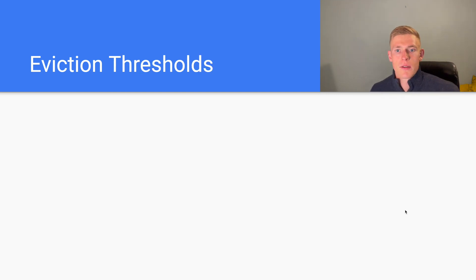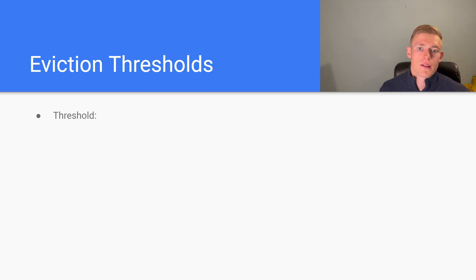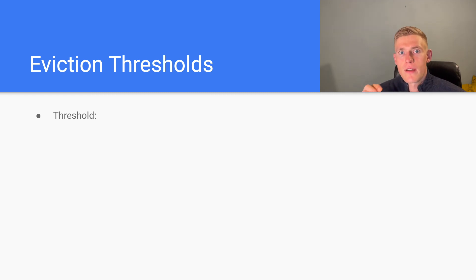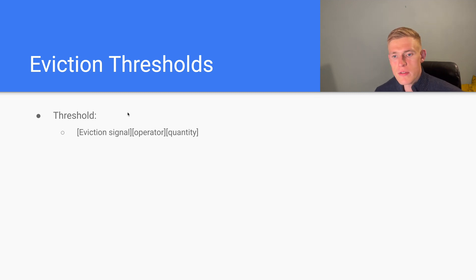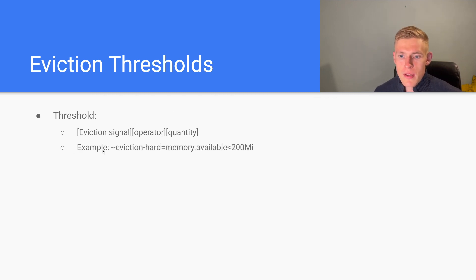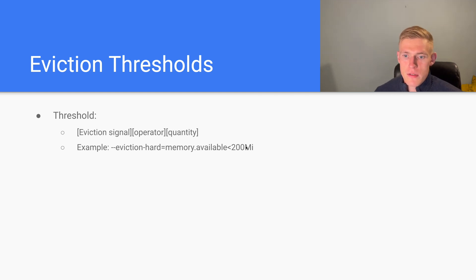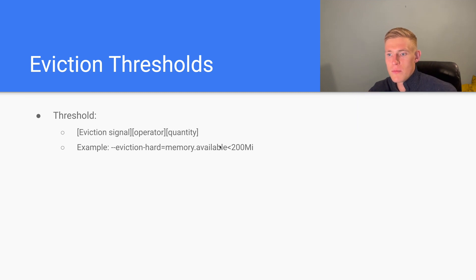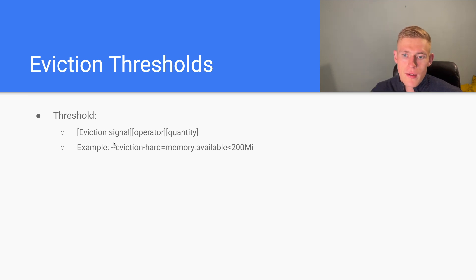Now, eviction thresholds. A threshold is essentially a signal, an operator, and a value — that is the format a threshold takes. An example would be memory.available less than 200 megabytes. If we want to specify that evictions start when memory.available drops below 200 megabytes, this is exactly what we would pass to kubelet as a parameter when executing kubelet.